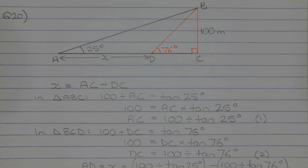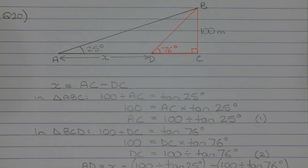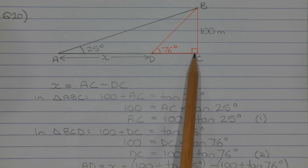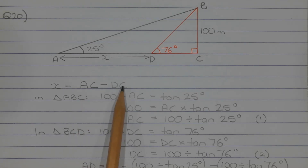Another thing to note is that triangles ABC and BCD are both right-angle triangles. This right angle is common to both triangles, so we can use regular right-angle trigonometry to work out the lengths of interval AC and DC.